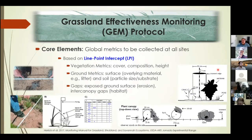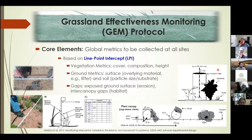Our core elements are the global metrics covered regardless of whether you're doing the Cadillac or Geo version. Vegetation metrics are based on line point intercept, giving us foliar and basal cover, vegetation composition, and height. Ground metrics look at overlying materials such as herbaceous litter and biotic crust. Gaps are important for erosion control — we have an app that takes about five minutes to document bare ground gaps — and we also implement inter-canopy gaps to get an idea of vegetation structure.